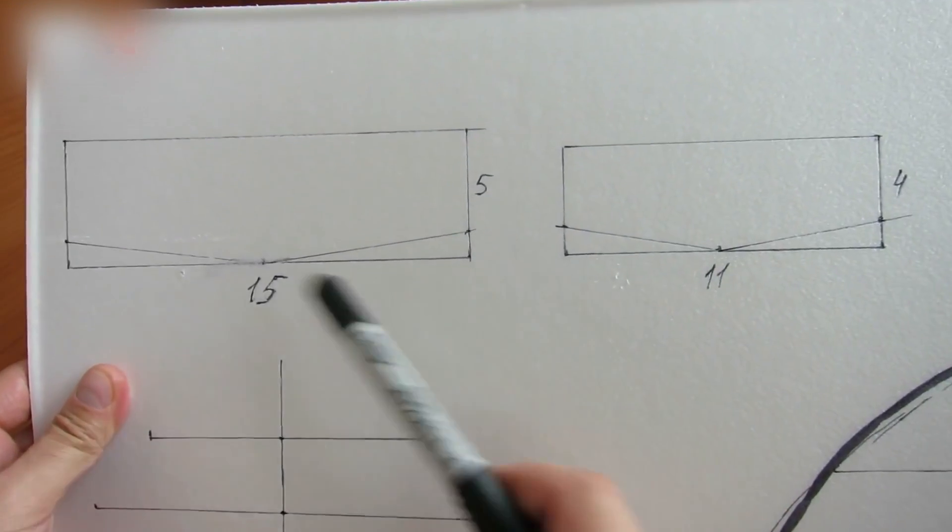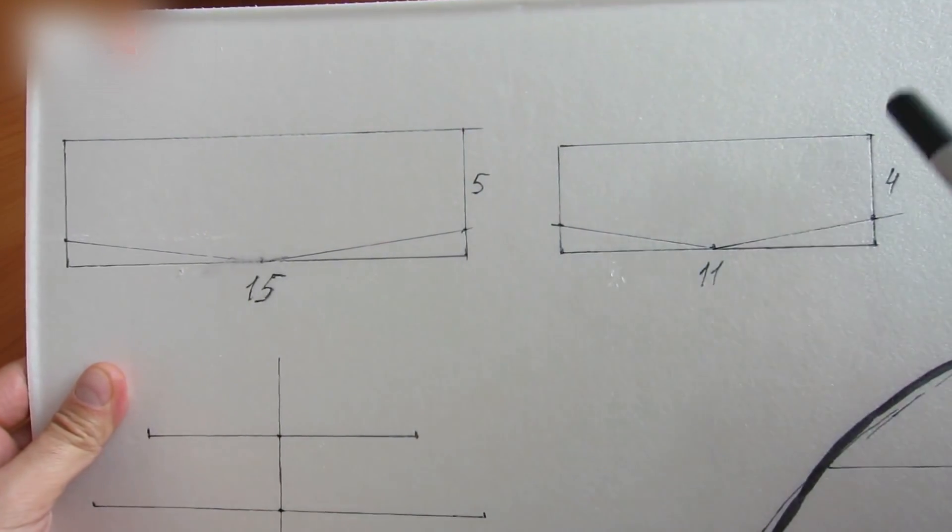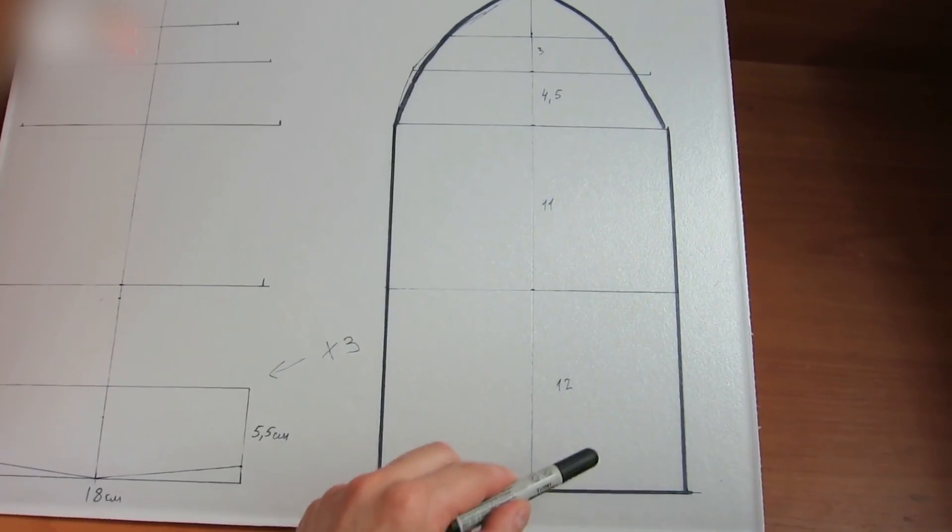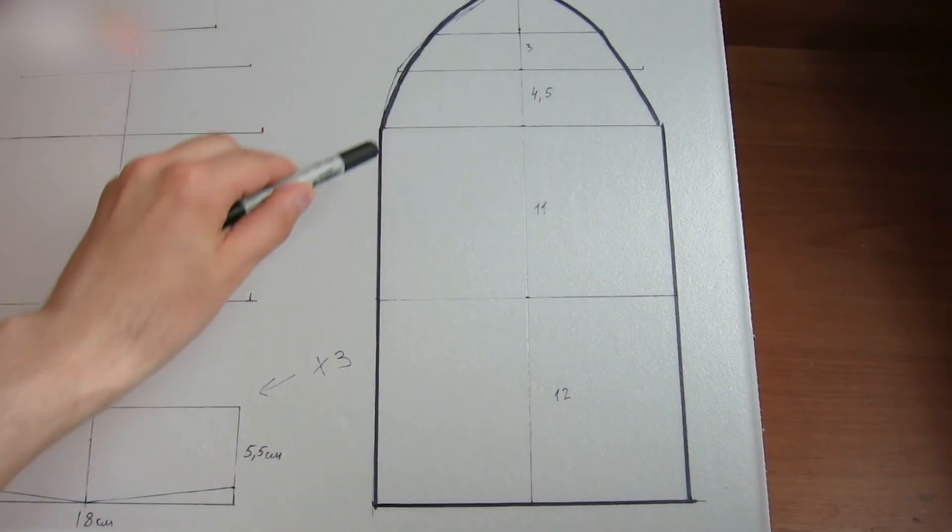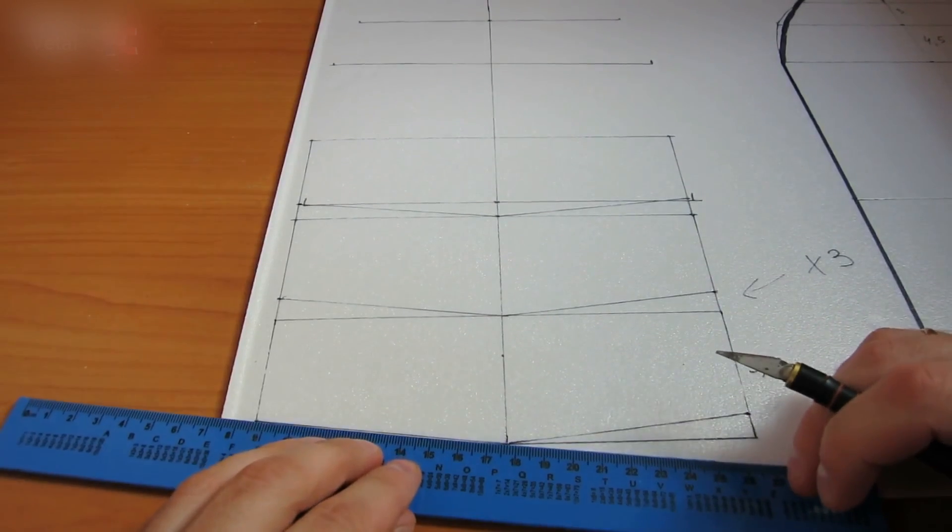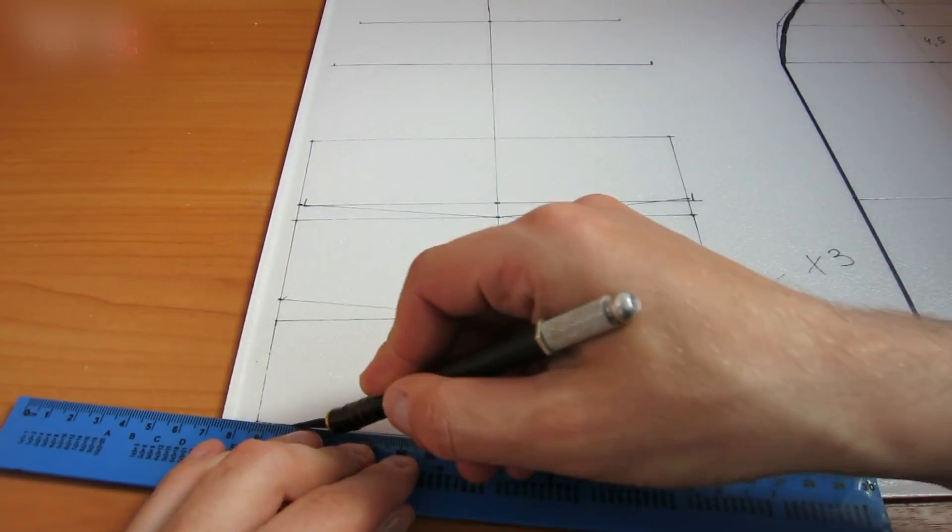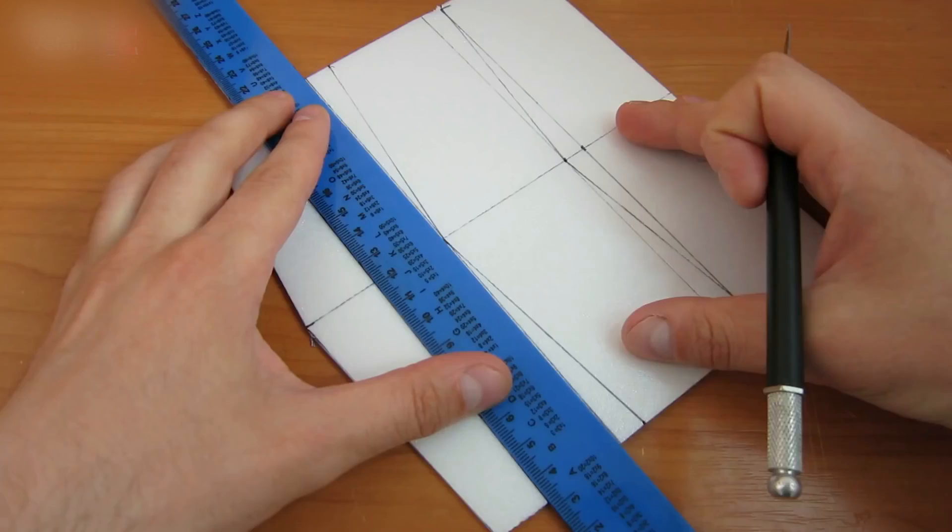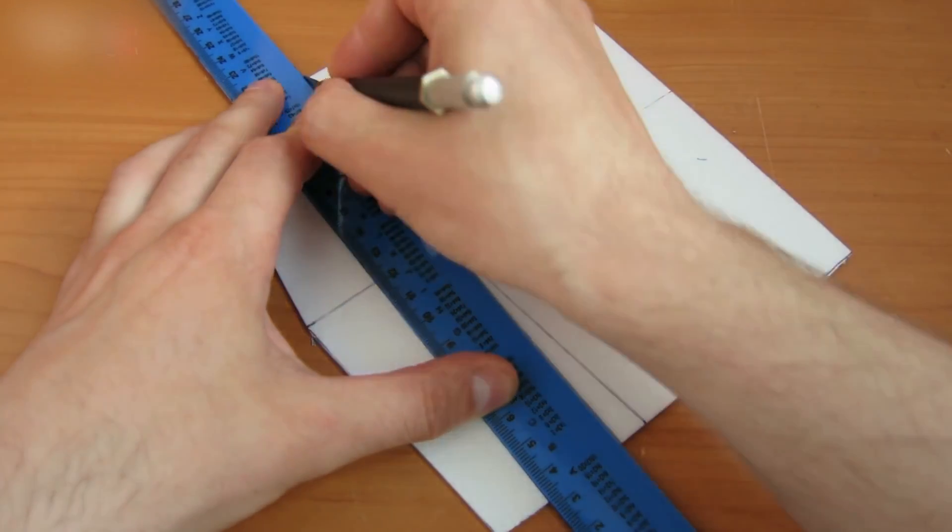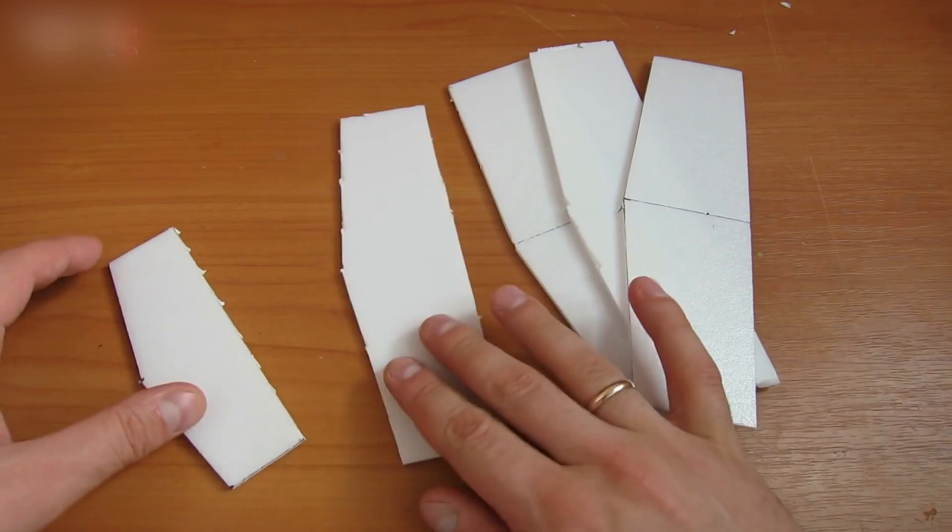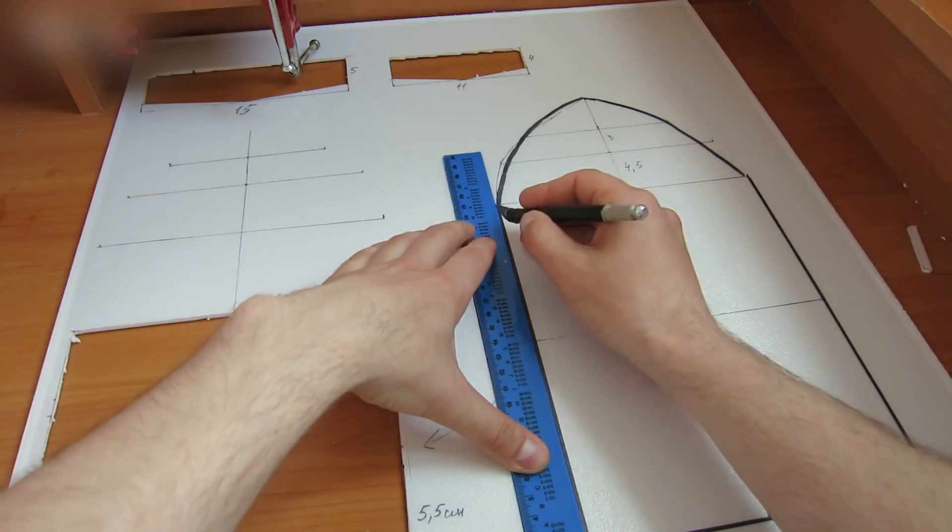We will also need one 15 by 5 centimeter rectangle and one 11 by 4 centimeter rectangle. Now draw the perimeter of the boat following these measurements, then take a breadboard knife and cut out all these figures. You can buy a knife like this at any project store. Here is what we get. You can sand the corners and edges down with sandpaper.